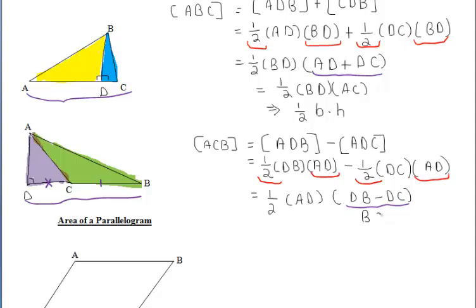So DB minus DC is just BC. We can find the area of this triangle by doing one half of AD times BC, which is yet again one half of our base times our height.